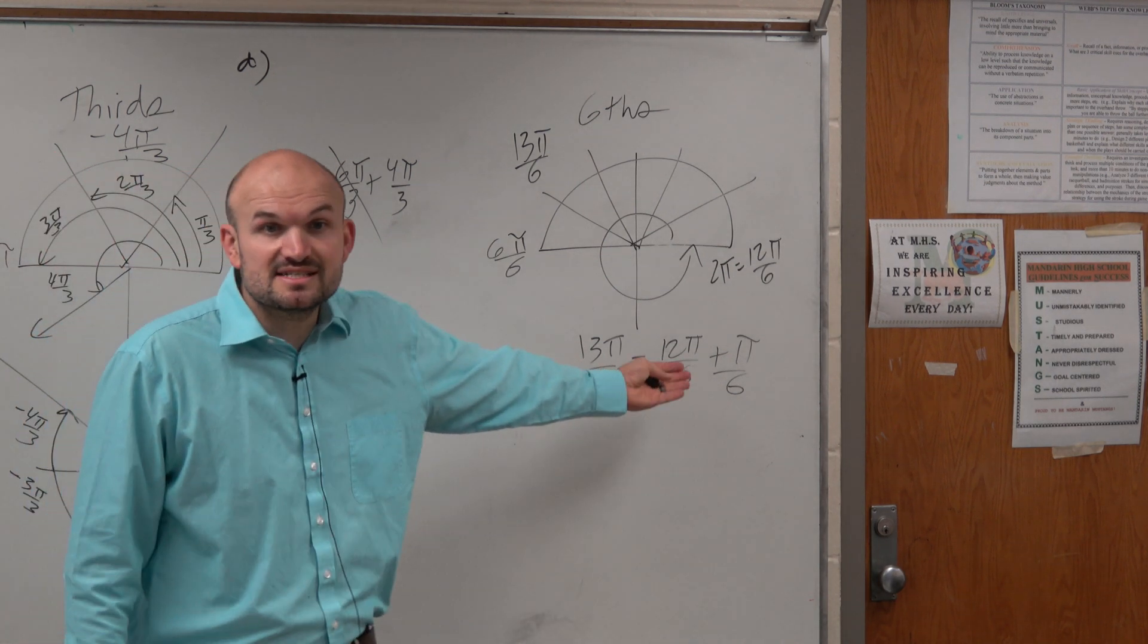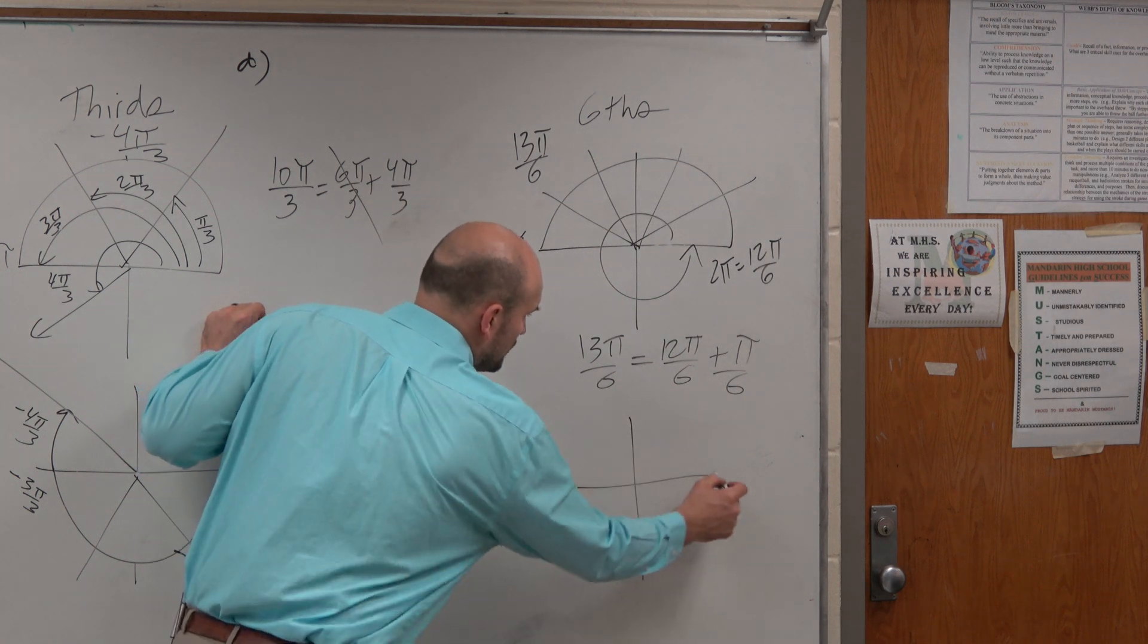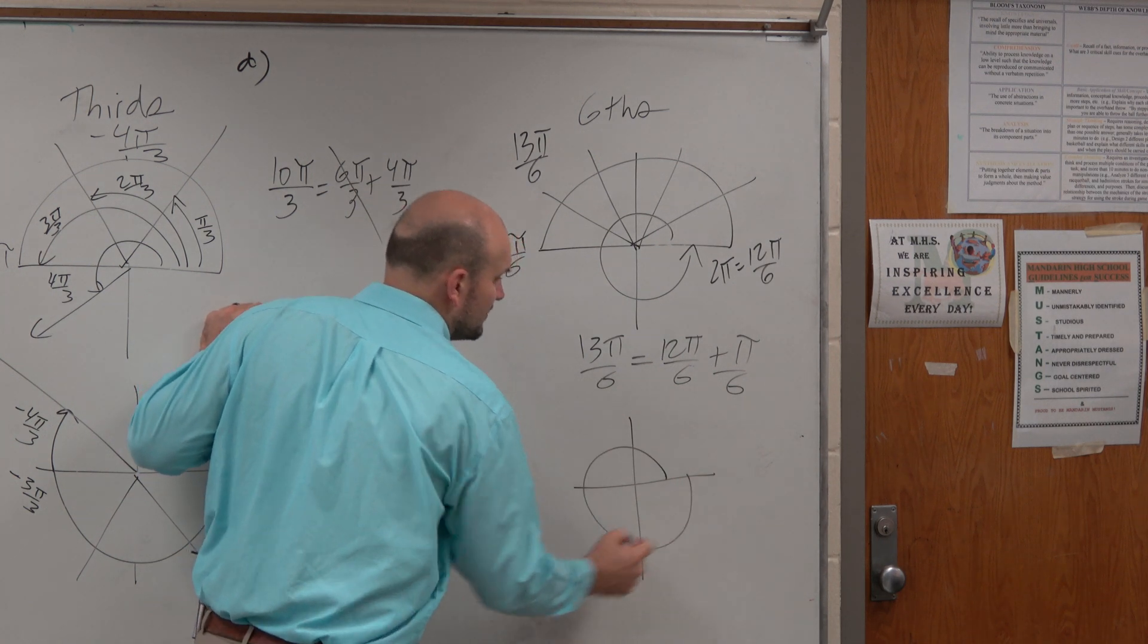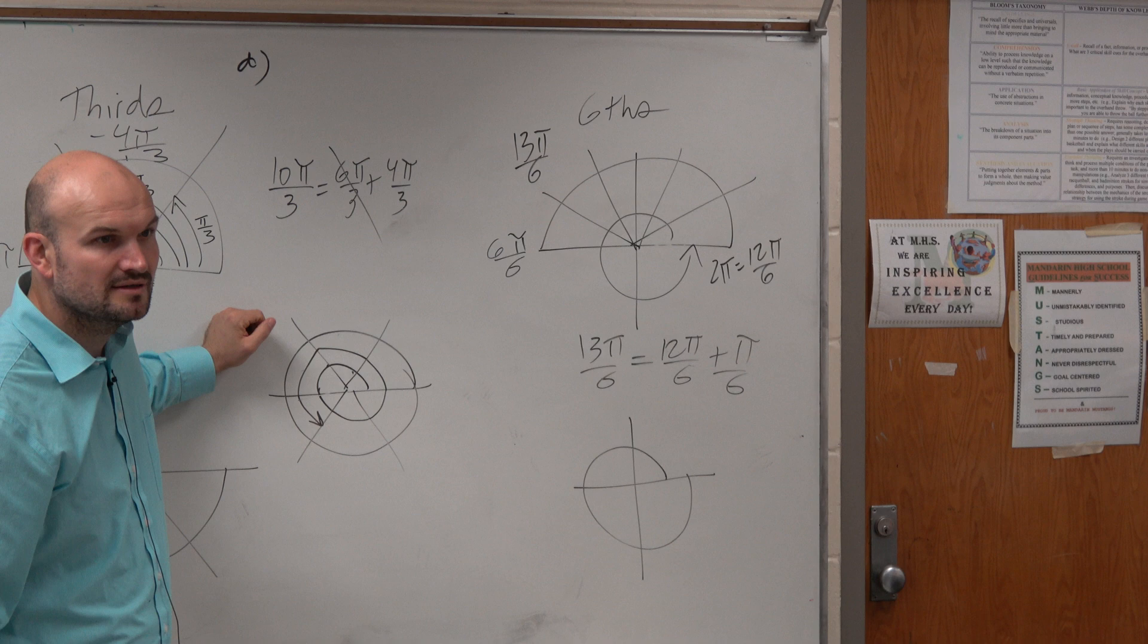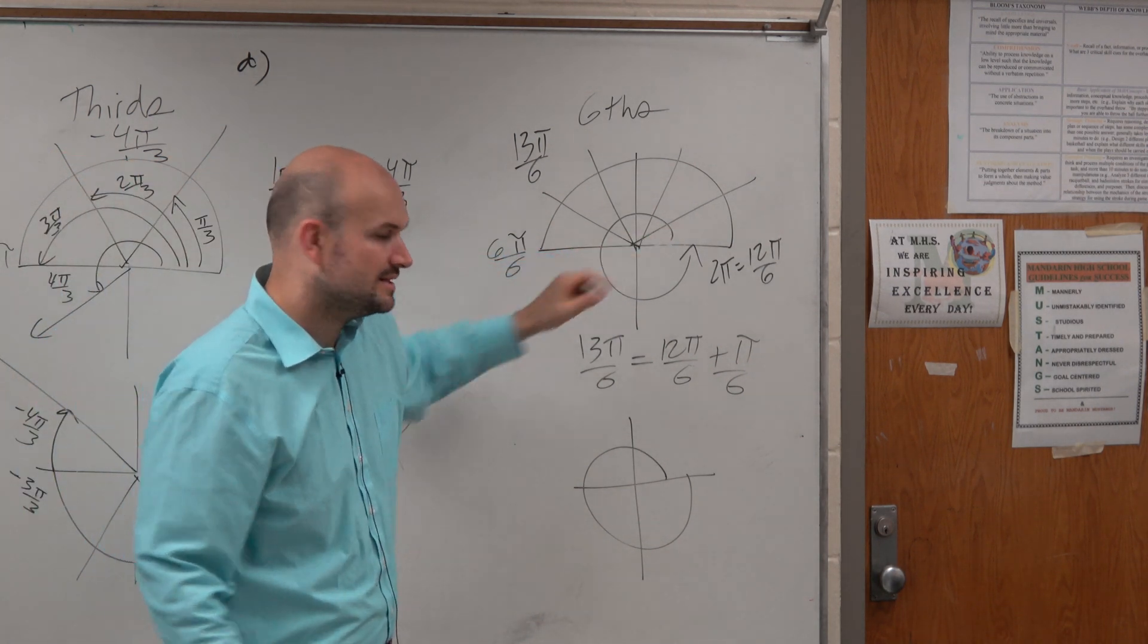And 12 pi over 6 is a revolution. It just takes me back to where I was. So what I'm going to do is I'm going to graph 12 pi over 6. That was easy. That was fast. And then I'm just going to do an extra pi over 6, which is that little sliver right there.